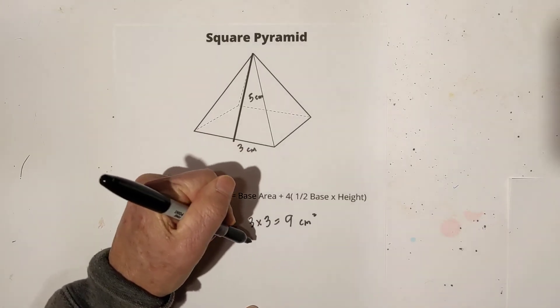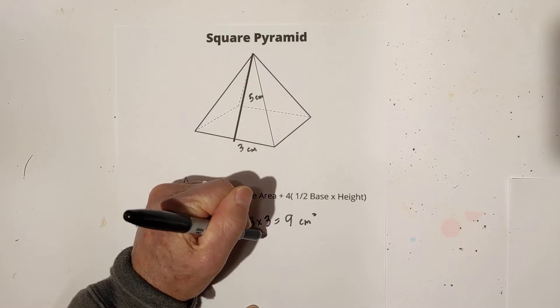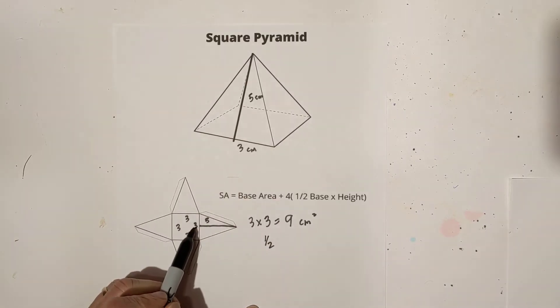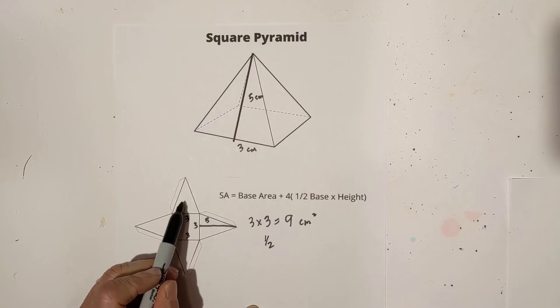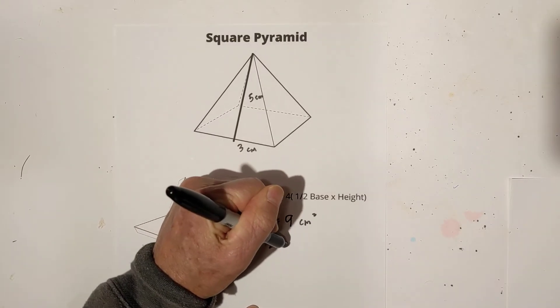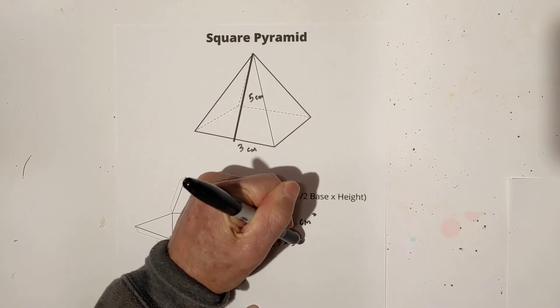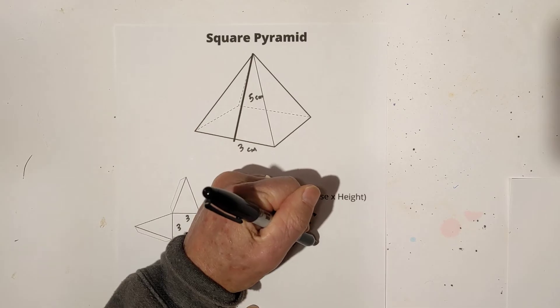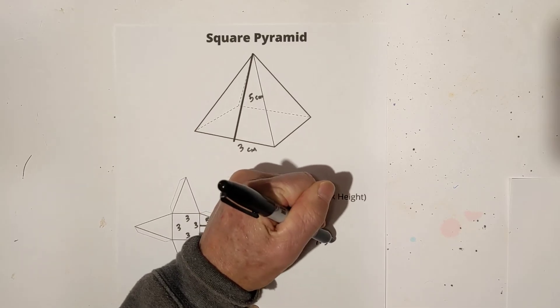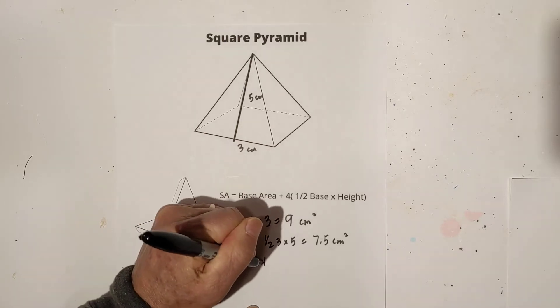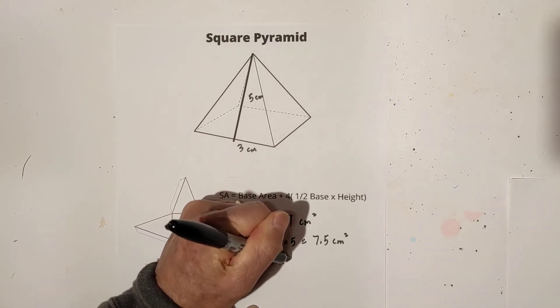Now, let's go one half base times height. So you have one half times the base, and the base is three. Notice that you have four of these, that's why you multiply it by four. So I'm going to go three times five. One half times three is one point five times five is seven point five, and that's going to be centimeters squared.